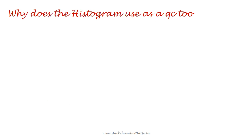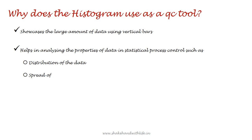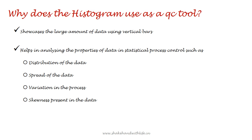Why is the histogram used as a QC tool? A histogram showcases large amounts of data using vertical bars. It helps in analyzing the properties of the data in statistical process control, such as distribution of the data, spread of the data, variation in the process, and skewness present in the data.